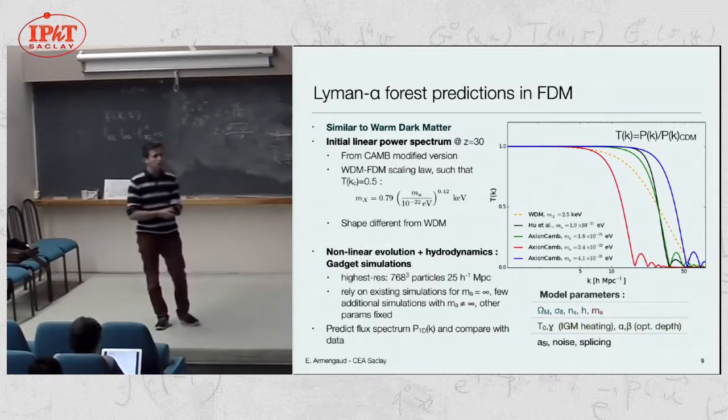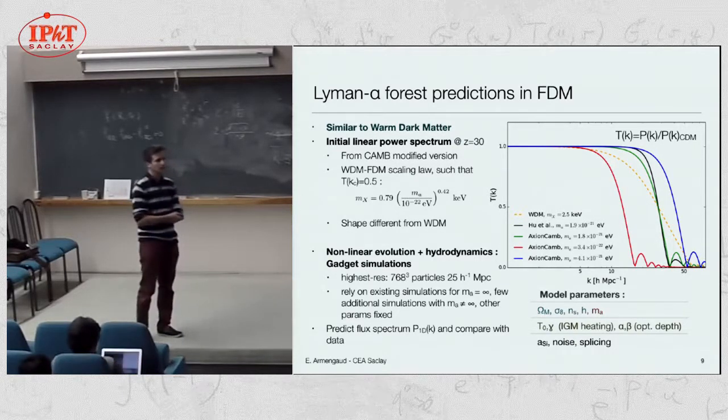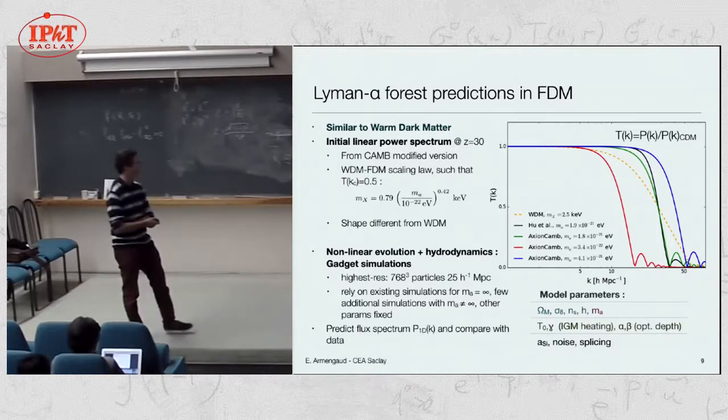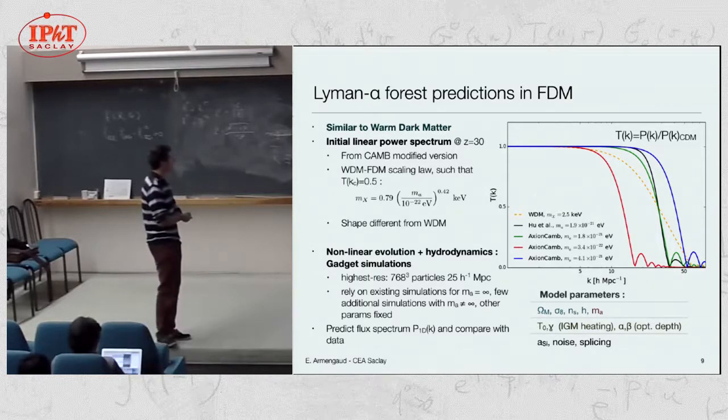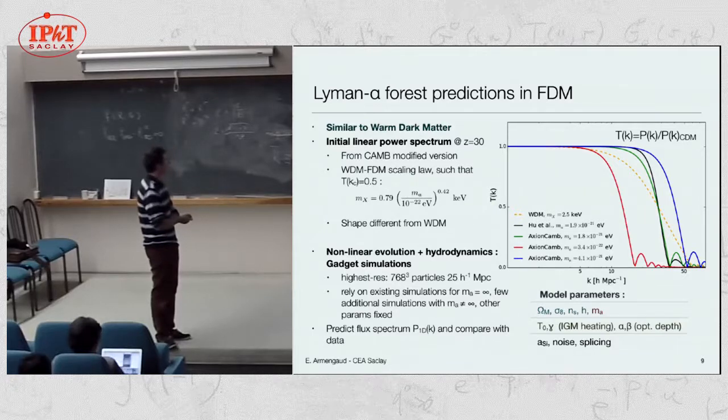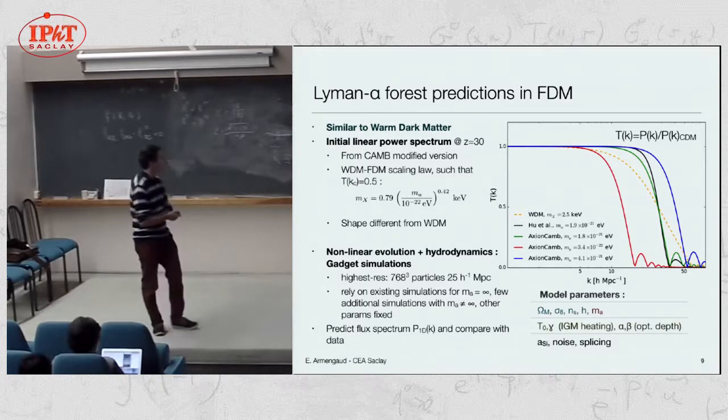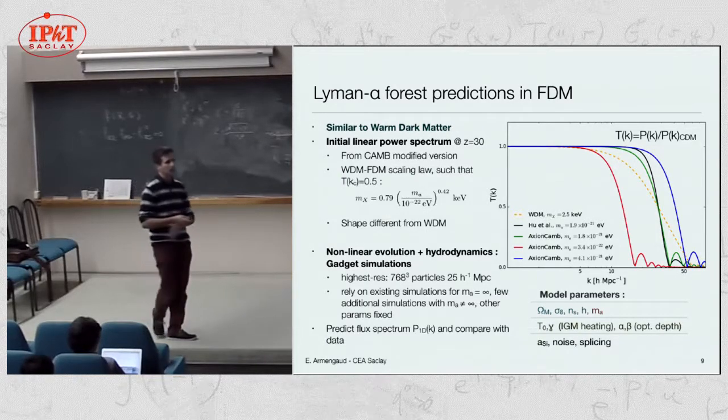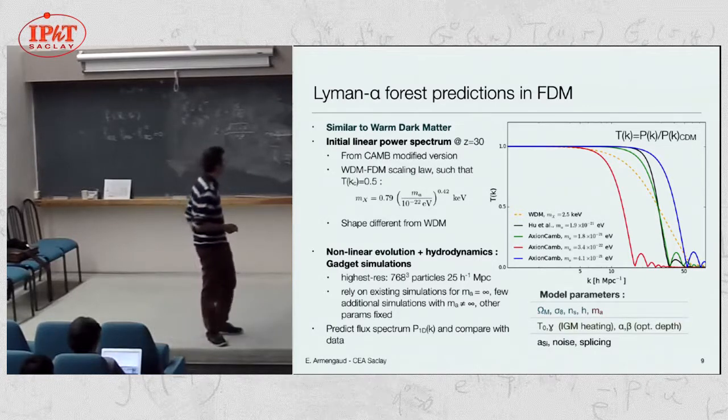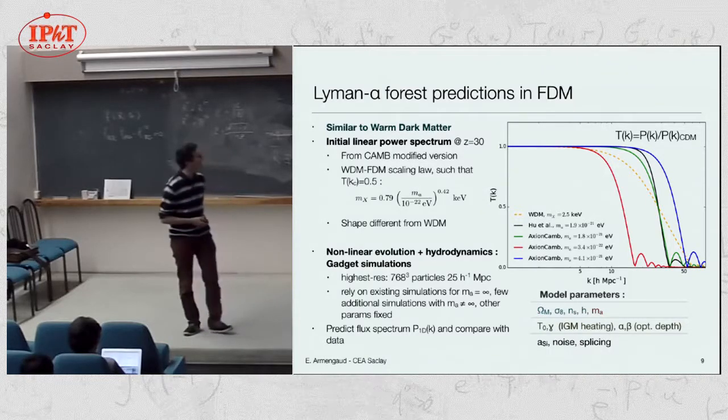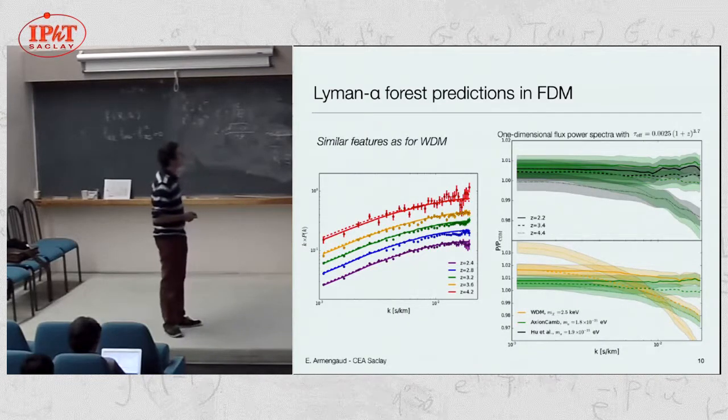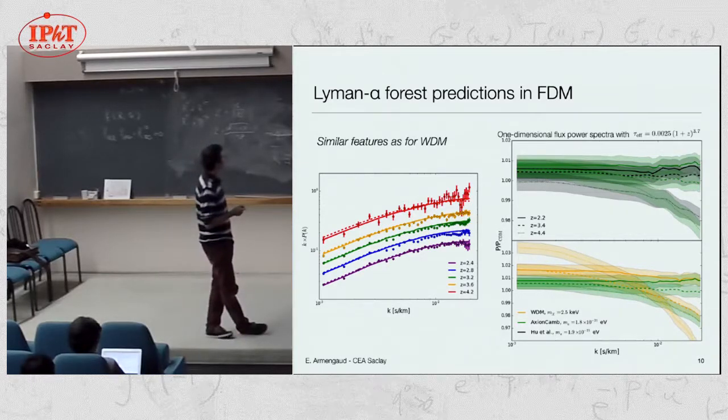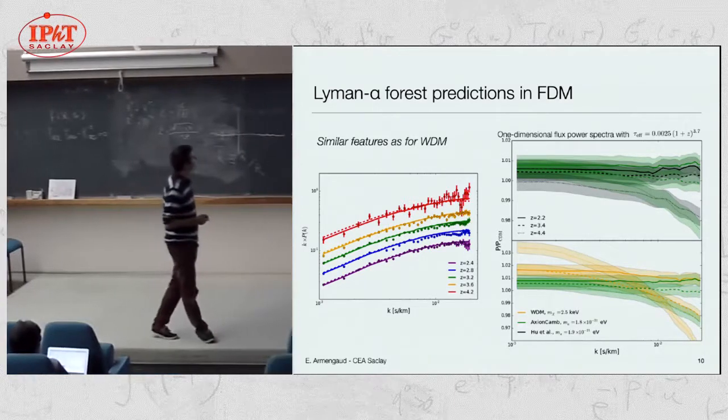Concerning the dirty things, to include non-linear physics and most importantly hydrodynamics of the intergalactic medium, we use GADGET-free simulations with a set of parameters. There are cosmological parameters, but more importantly, astrophysical parameters for the IGM physics. This allows us to predict, for a given set of parameters, the observable Lyman-alpha forest flux.